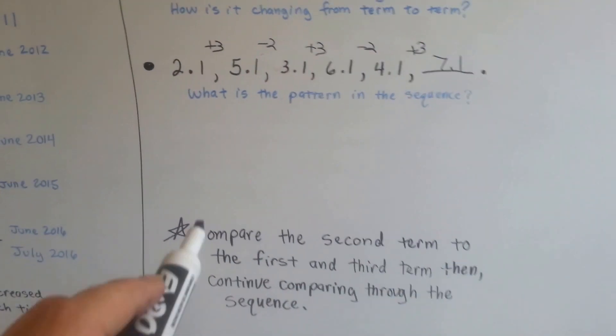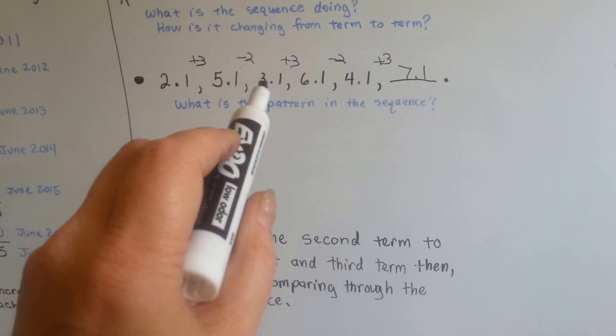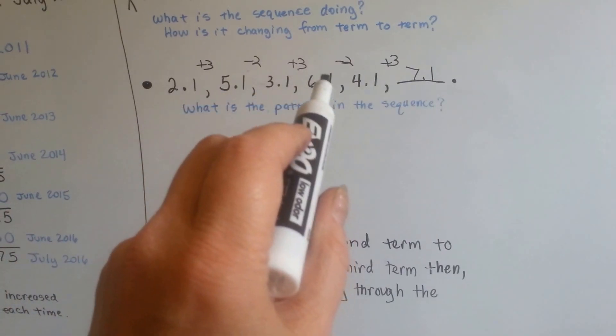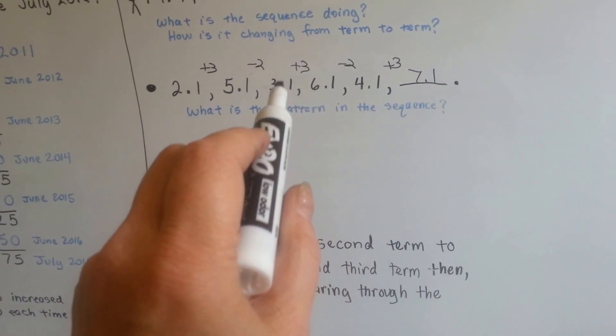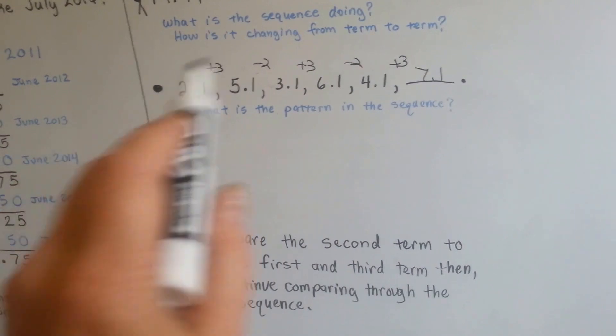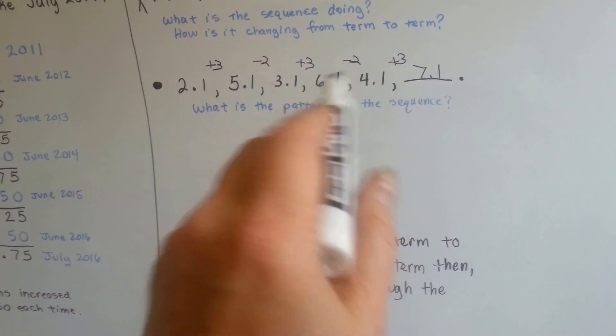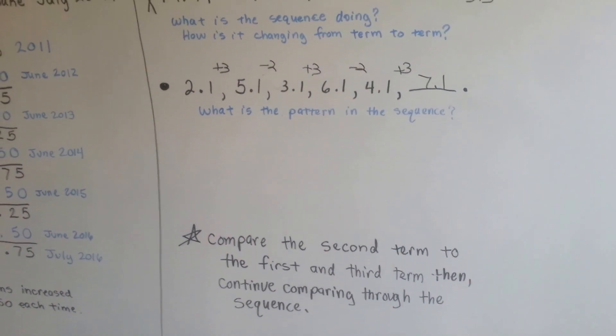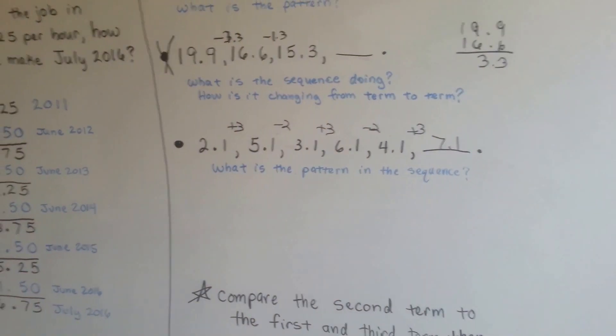So you compare the second term to the third term. Then when you get to that one, you compare that one to the second one and to the fourth one. And then you move over and compare that one to the third one and the fifth one. And you keep comparing each one to the one in front of it and behind it to see what the pattern is. And remember, sometimes you don't have enough information to solve it. So keep your eyes open.